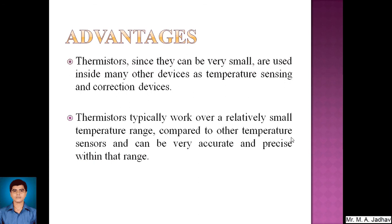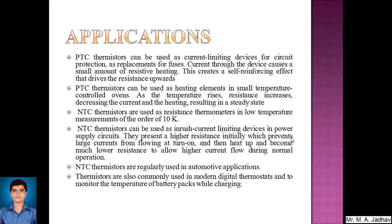There are two types of thermistors: PTC (positive temperature coefficient) and NTC (negative temperature coefficient). PTC thermistors can be used as current-limiting devices for circuit protection as a replacement for fuses — current through the device causes resistive heating, driving resistance upward in a self-reinforcing effect. PTC thermistors can also be used as heating elements in small temperature-controlled ovens: as temperature rises, resistance increases, decreasing the current, reaching a steady state. NTC thermistors are used as resistance thermometers in low-temperature measurements of the order of 10 Kelvin.